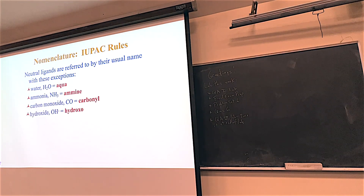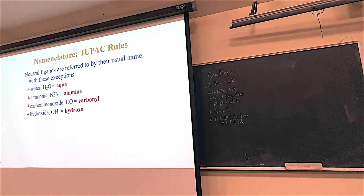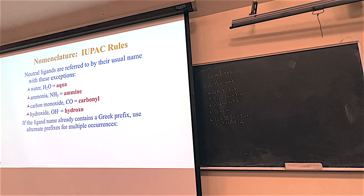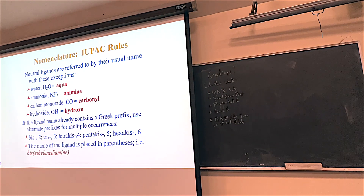Some ligands have special names because they're so common. Water is referred to as aqua. Ammonia is ammine — A-M-M-I-N-E, notice there are two M's. In organic chemistry an amine is a nitrogen-containing compound with single bonds, but here ammine with two M's means ammonia. Carbonyl refers to carbon monoxide — a few differences from organic chemistry. Hydroxides are referred to as hydroxo. On top of that, if the particular compound has a Greek prefix in the ligand name, you use an alternate way of counting it — I call it bis, tris, tetrakis.